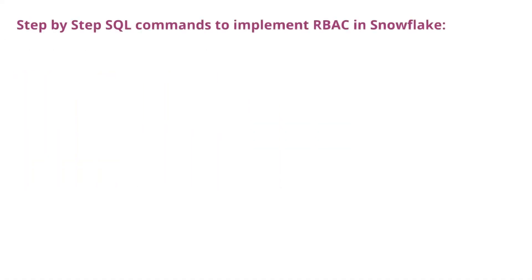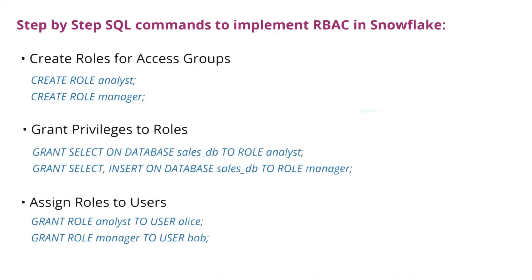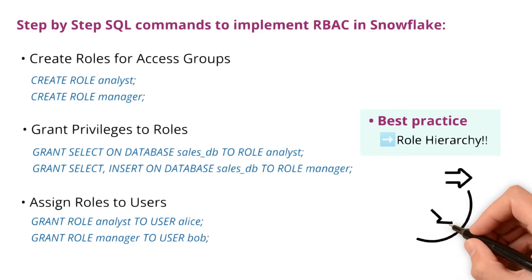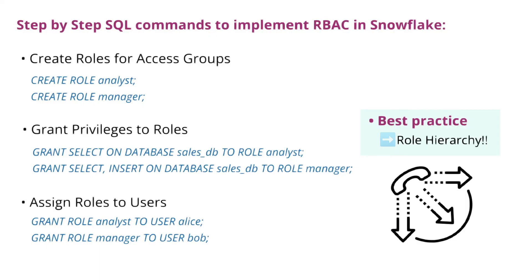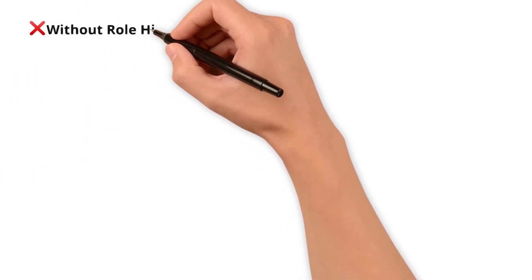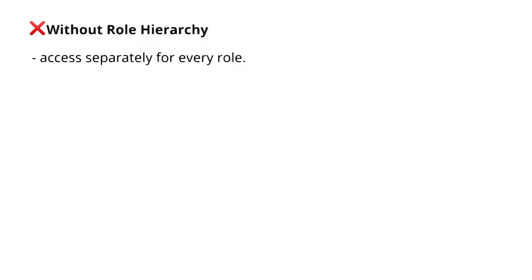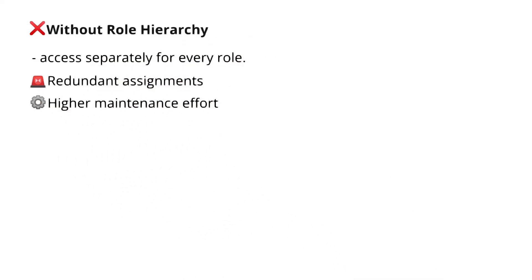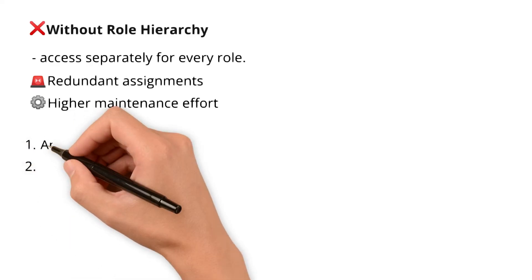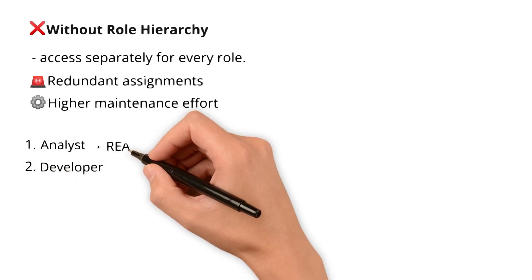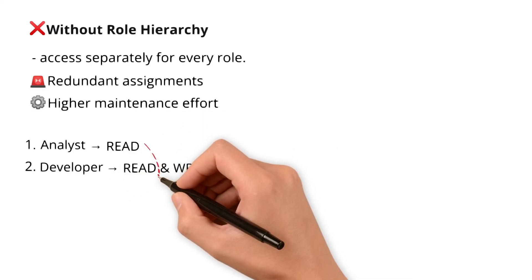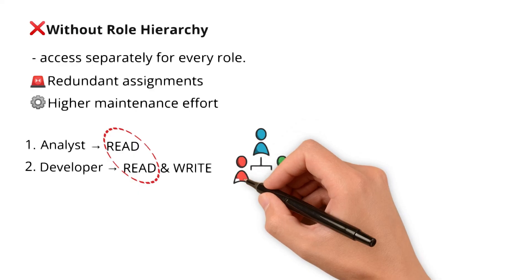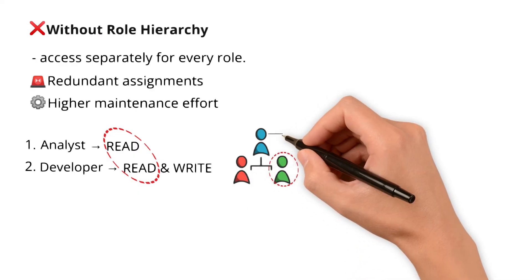Here are the step-by-step SQL commands to implement RBAC in Snowflake. The best practice as you implement RBAC is following role hierarchy, which is simple yet scalable. Without role hierarchy, you must assign access separately for every role, meaning redundant assignments and higher maintenance effort every time access changes. For example, if you have two roles — analyst and developer — the analyst needs read access and the developer needs read and write access. Instead of granting read twice to both roles, you can create a hierarchy, and the developer role automatically inherits all privileges of the analyst role.